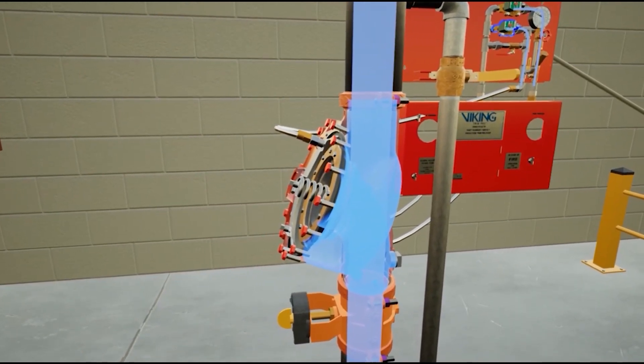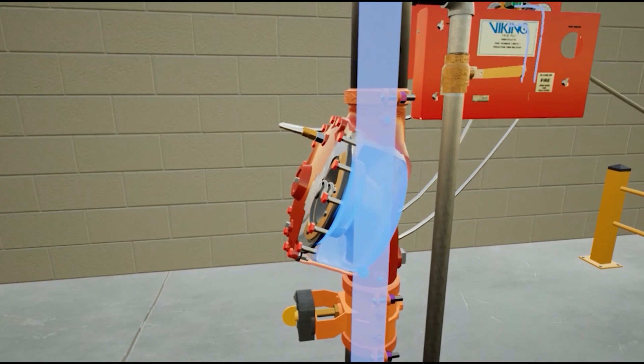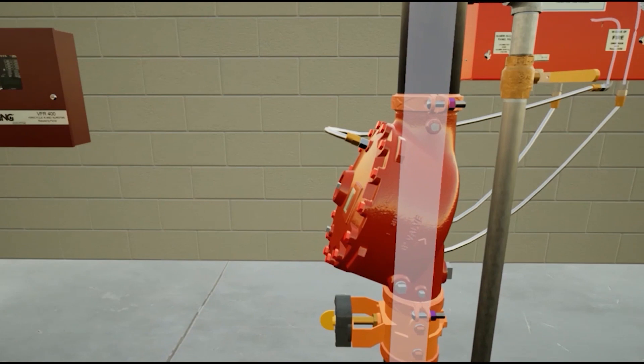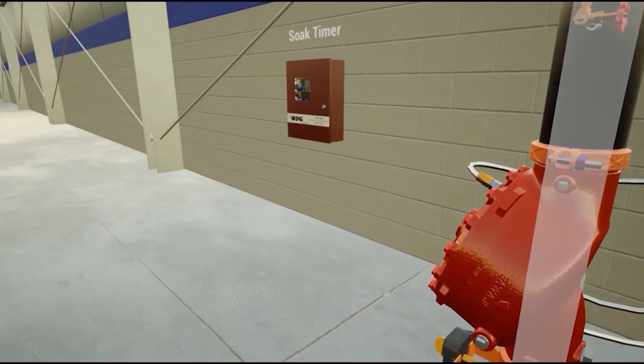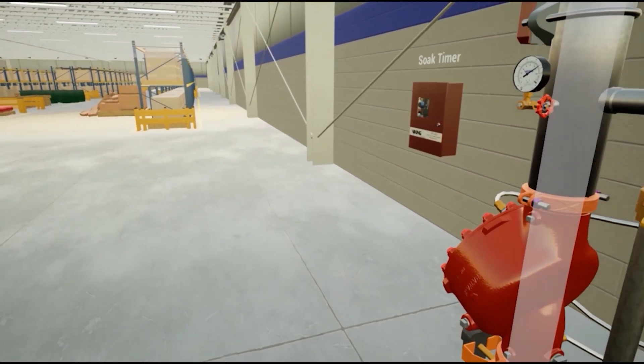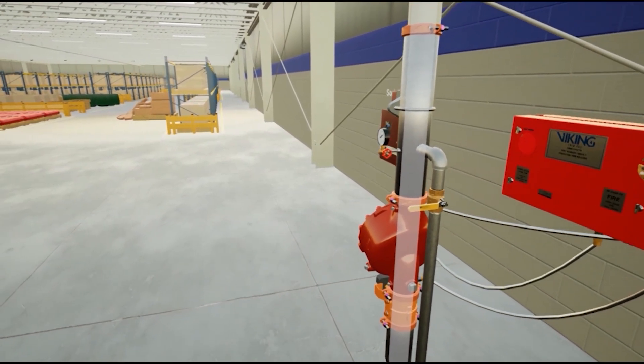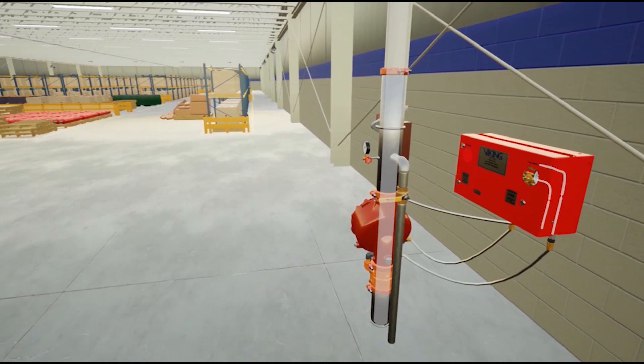When the valve closes, water will no longer discharge from the sprinkler. Should the fire reignite, the temperature will increase, activating a heat detector, sending a signal to the releasing panel, and starting the process again.